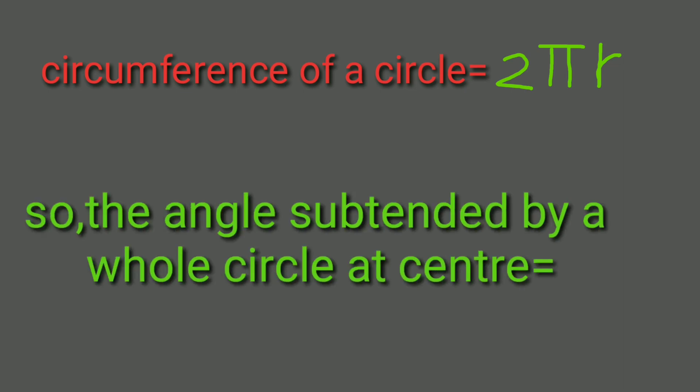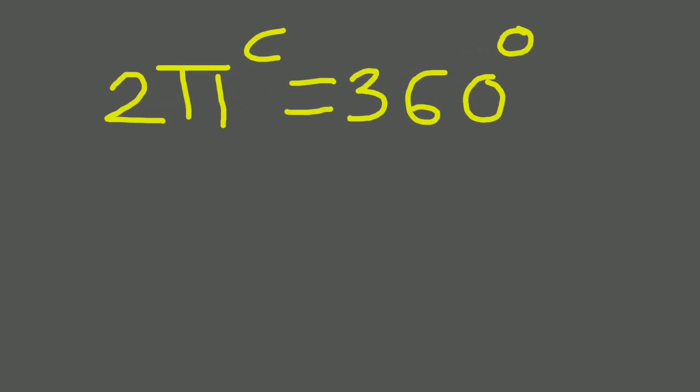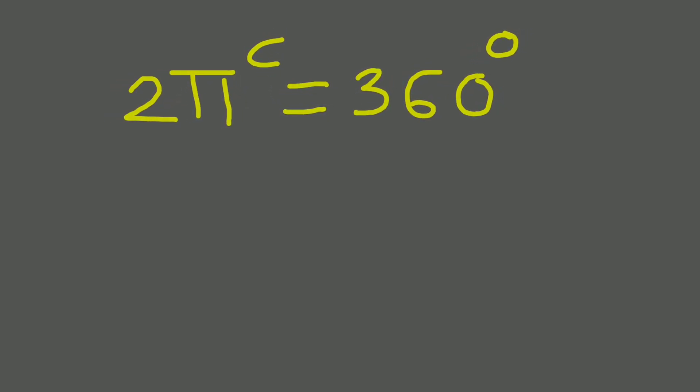We know that the angle formed at the center of a circle is 360 degrees. It means 2π radians equals 360 degrees. So π radians equals 180 degrees. How easy is this?